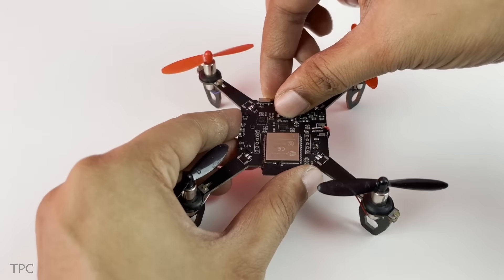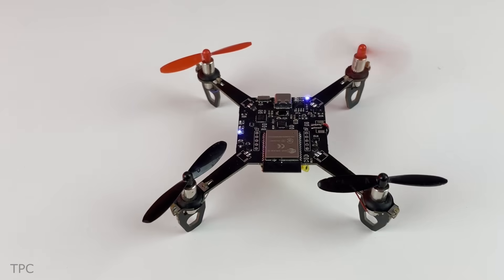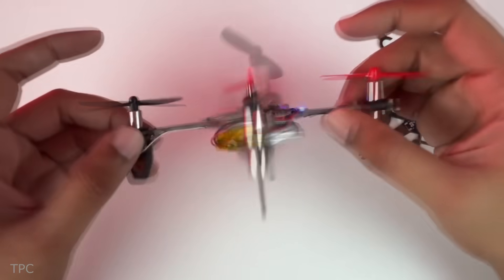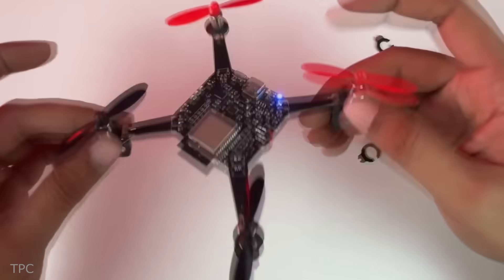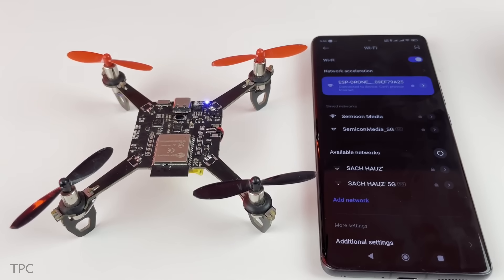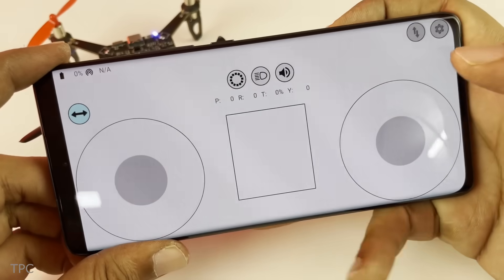The drone doesn't have a traditional frame. Instead, its PCB doubles as the structure. It uses an ESP-32 as the flight controller, and for flight, it's equipped with four 720-coreless BLDC motors and 55-millimeter propellers. The ESP-32 connects to a mobile app, allowing the drone to be controlled via Wi-Fi.